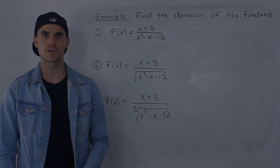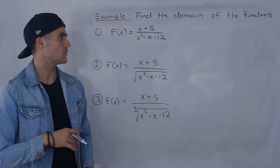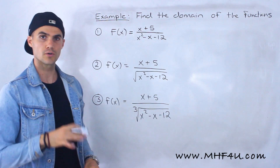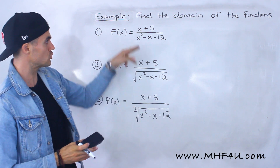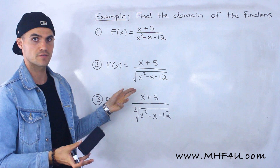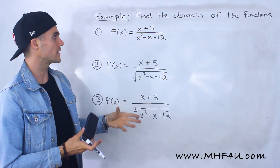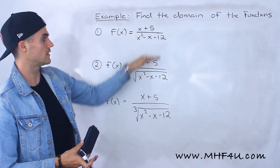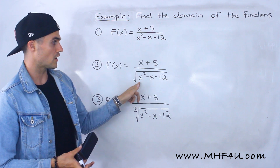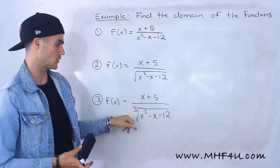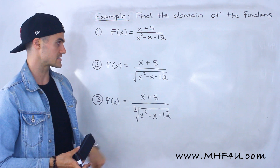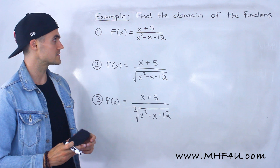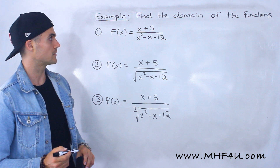What's up, everyone? Welcome back. Patrick here. In this video, we've got to find the domain of these three functions. Notice they're very similar functions — the numerators are the same, x plus 5, but the denominators are a little different. Here we have x squared minus x minus 12, here we have the square root of that same expression, and here we have the third root of that same expression. So kind of similar, but the domains are going to be different.